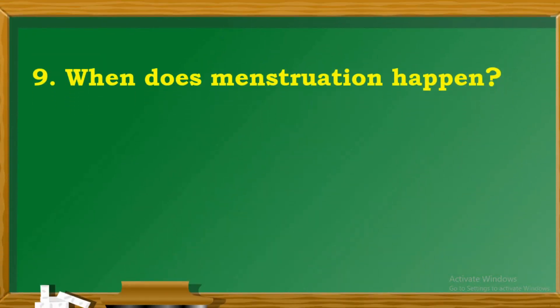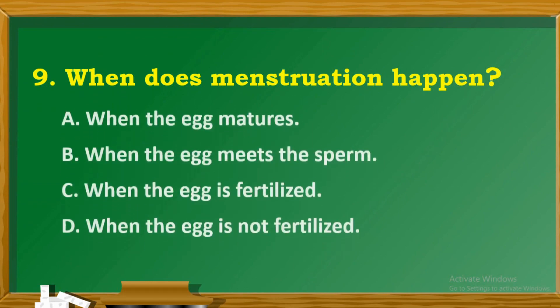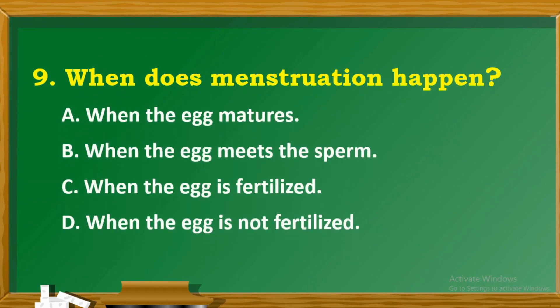Question 9: When does menstruation happen? A. When the egg matures. B. When the egg meets the sperm. C. When the egg is fertilized. D. When the egg is not fertilized.